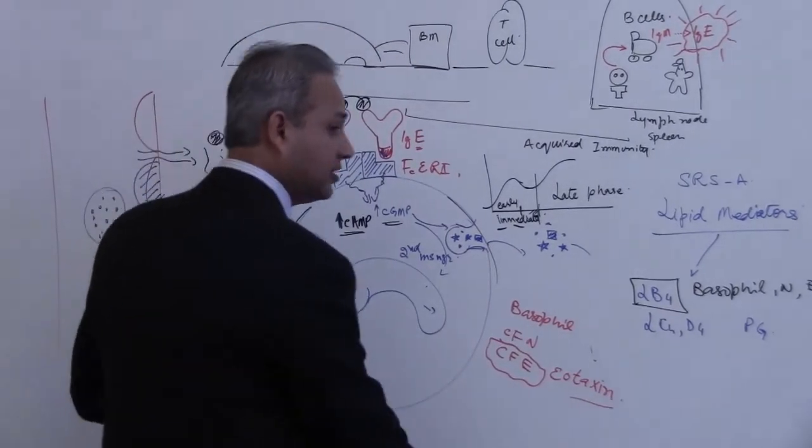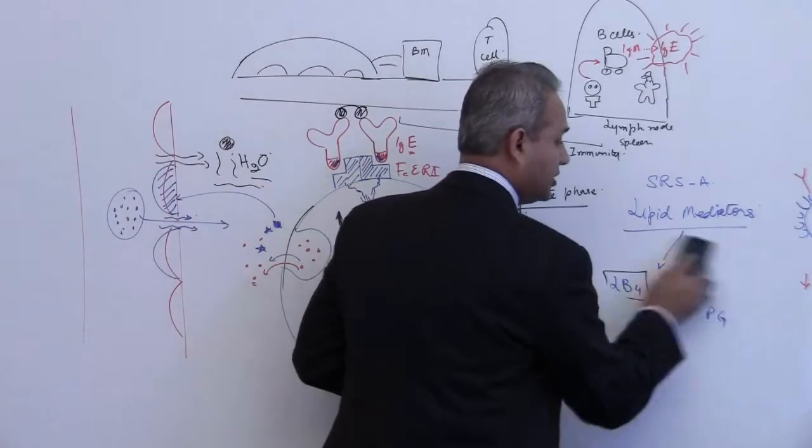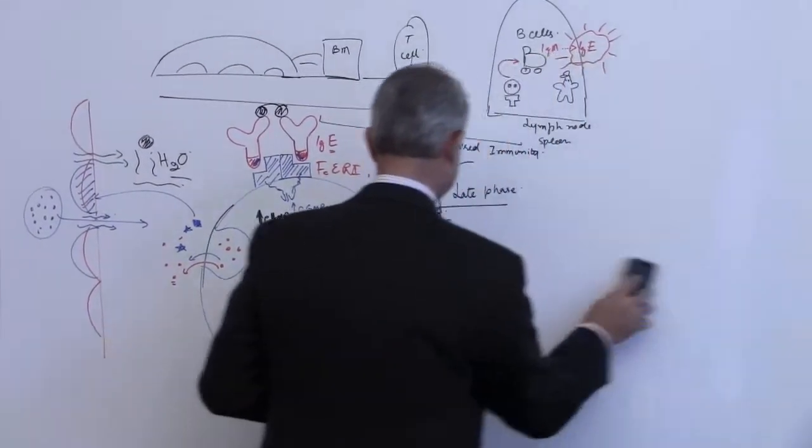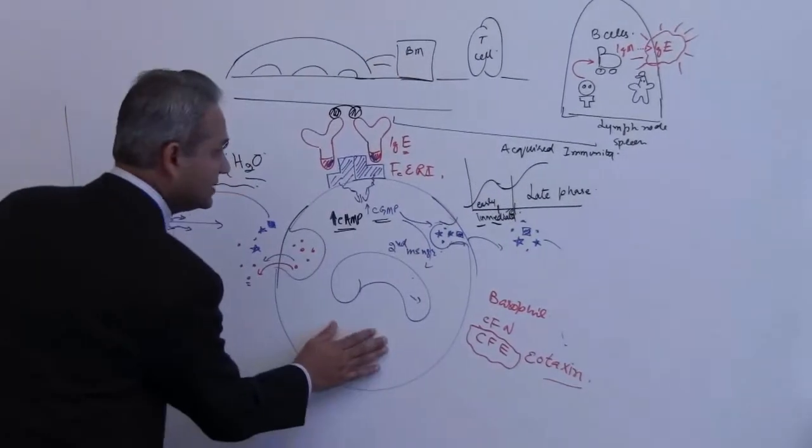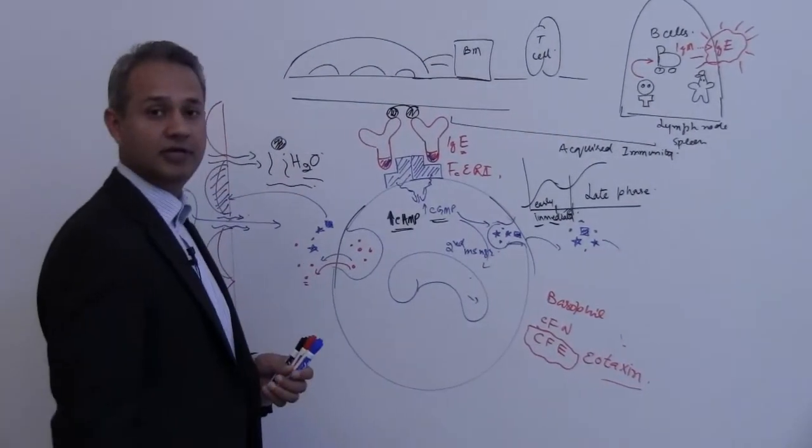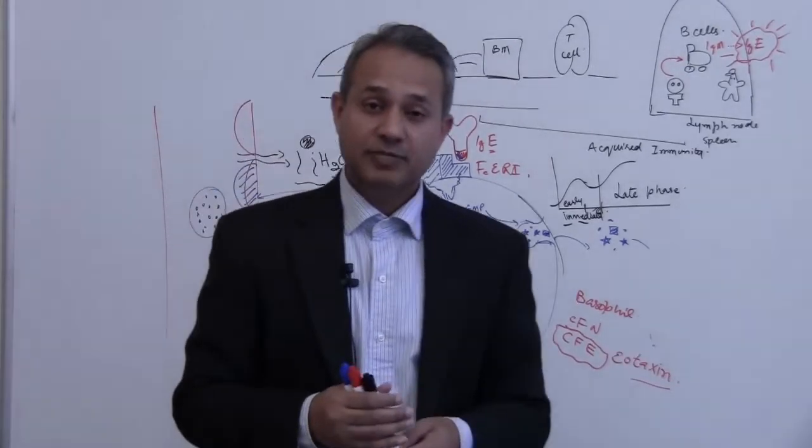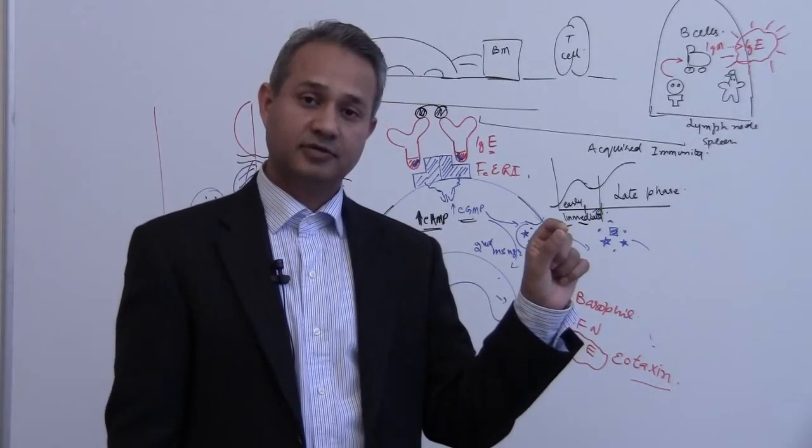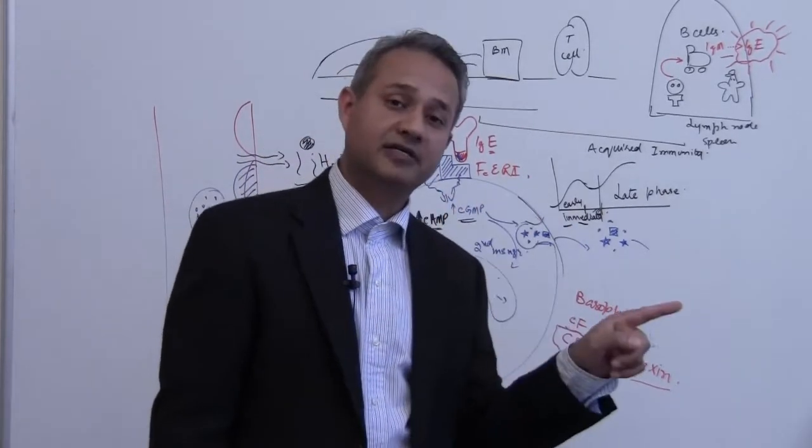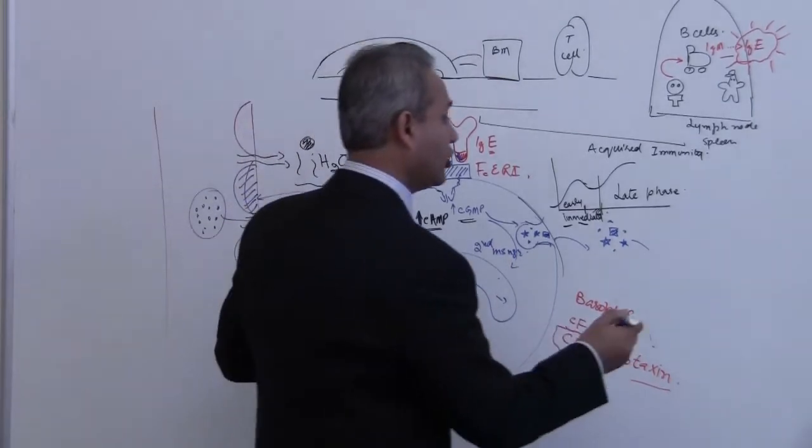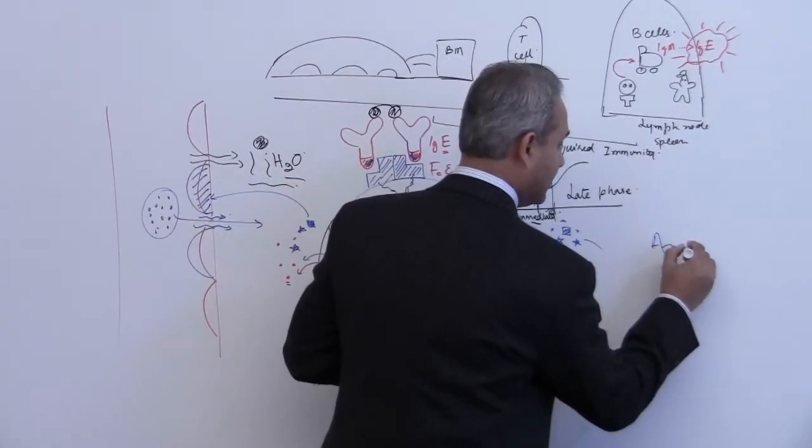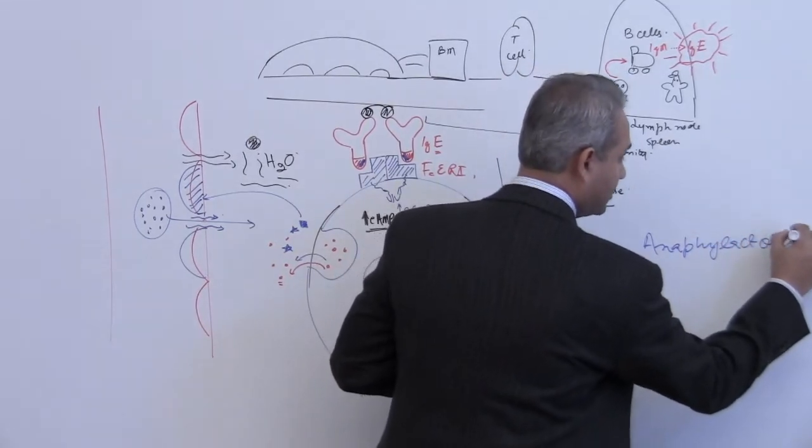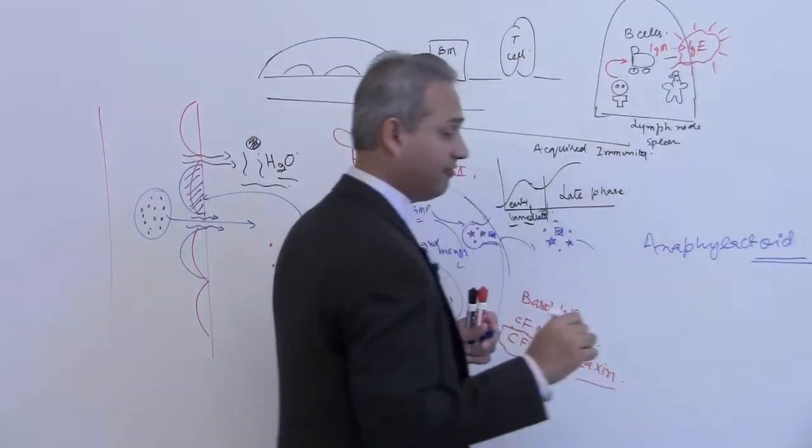The other thing to note in this which is really interesting: these mast cells can actually cause an anaphylaxis-like reaction. Of course, that would be called anaphylactoid, anaphylactoid instead of anaphylaxis.